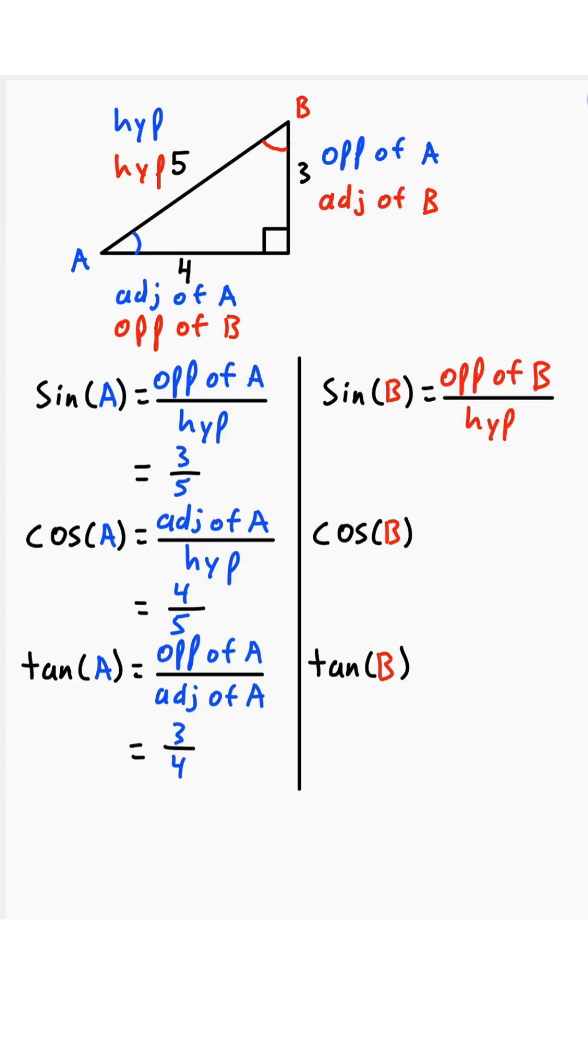So sine of b is opposite of b over hypotenuse, which is 4 over 5. Cosine of b is adjacent of b over hypotenuse, which is 3 over 5. And tangent of b is opposite of b over adjacent of b, which is 4 over 3.